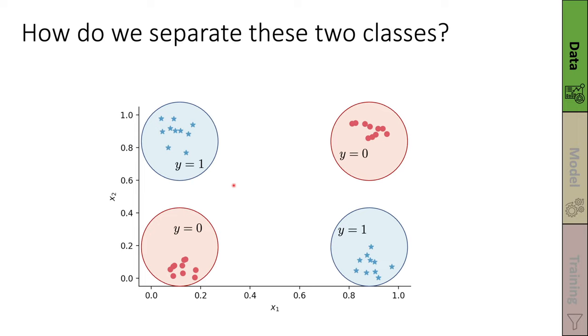And whatever happens in the middle is not really defined by our training data. So we could have an arbitrary choice here, either assigning class 0 or class 1 is both fine, at least judging from our training data.